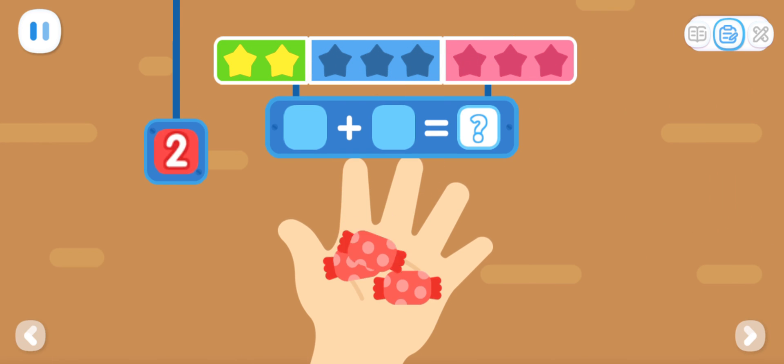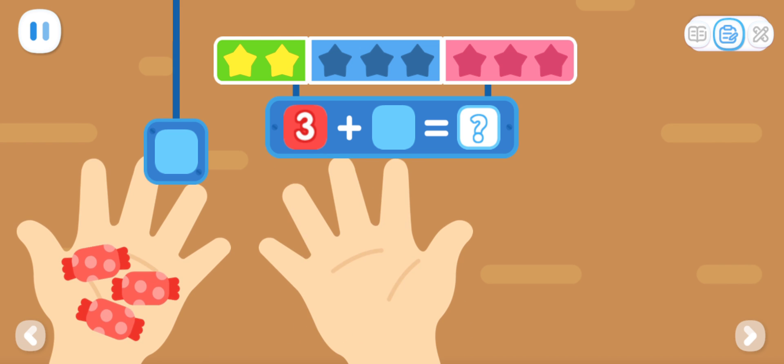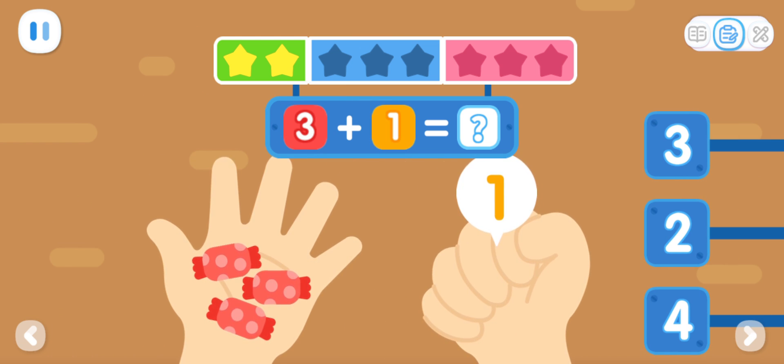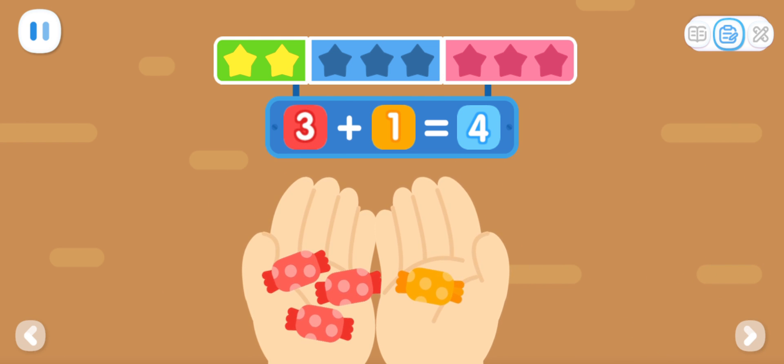There are three candies in the left hand. There is one candy in the right hand. How many candies are there in total? You've got it! Three plus one equals four.